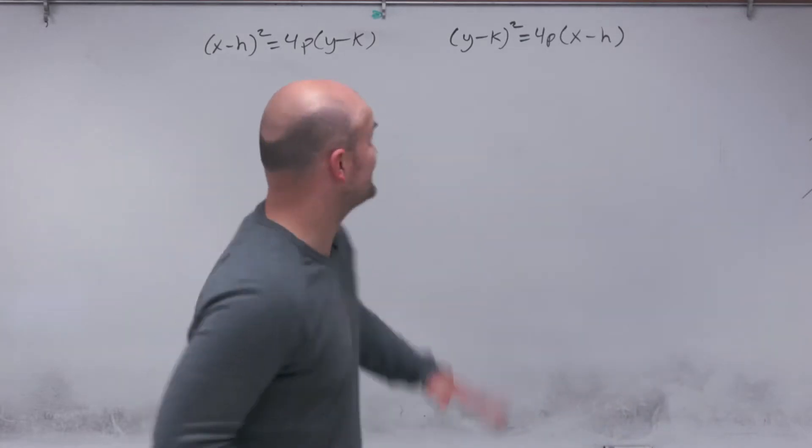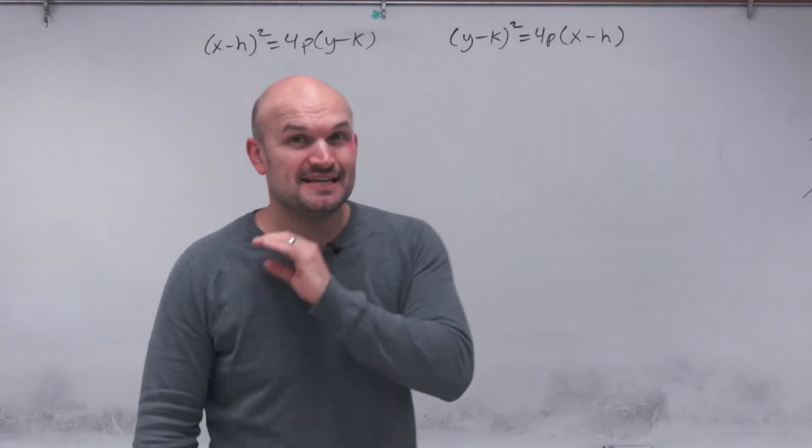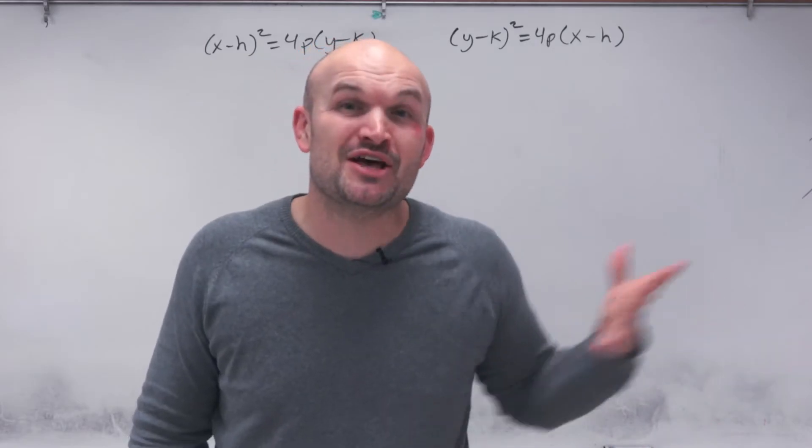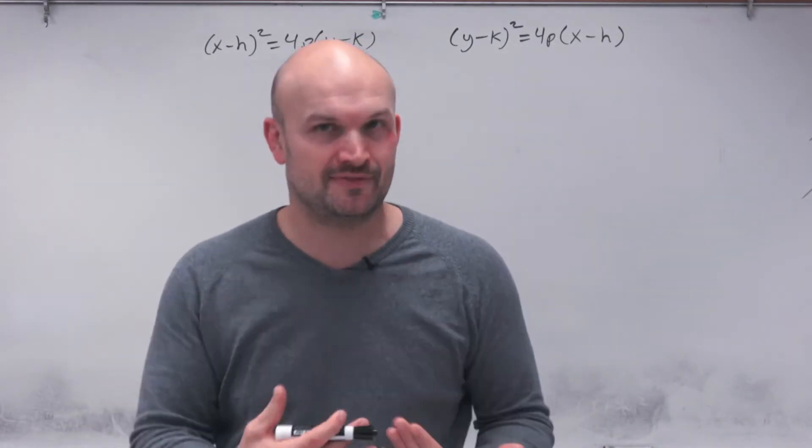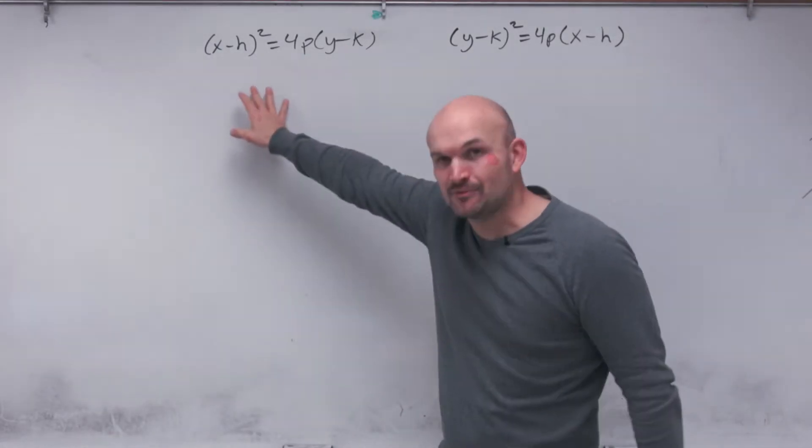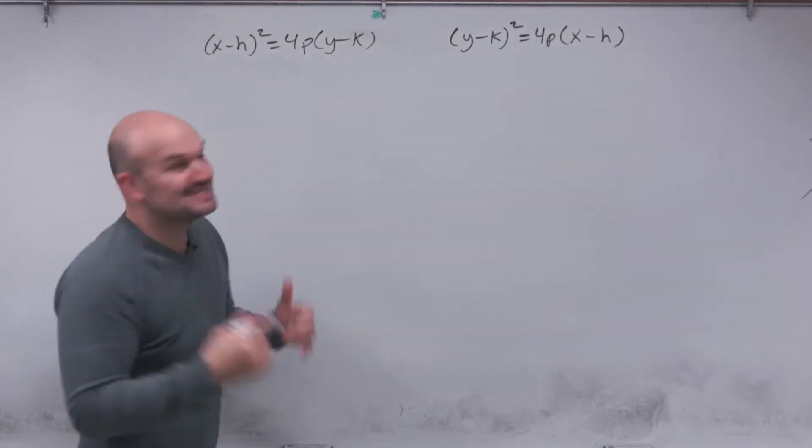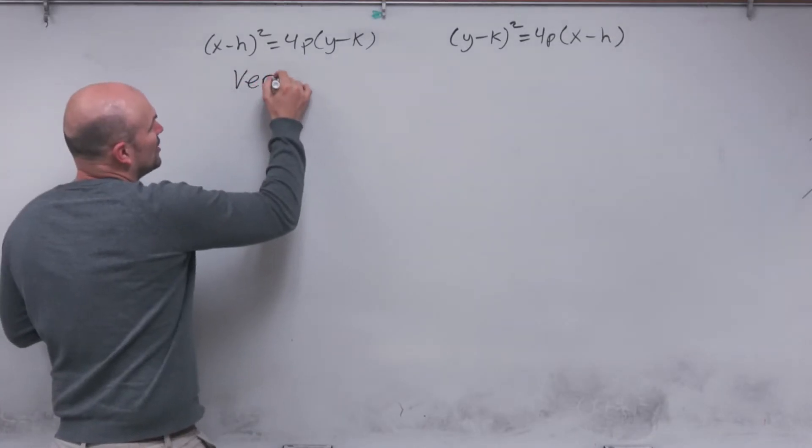The first thing you might recognize is this h and this k. If the h and the k are familiar to you, that probably means you're familiar with vertex form of a quadratic equation, which represented the parabola on the graph, right? Well, that's the same thing we're going to have here. When we recognize the h and the k, yes, guess what? That is going to be your vertex.